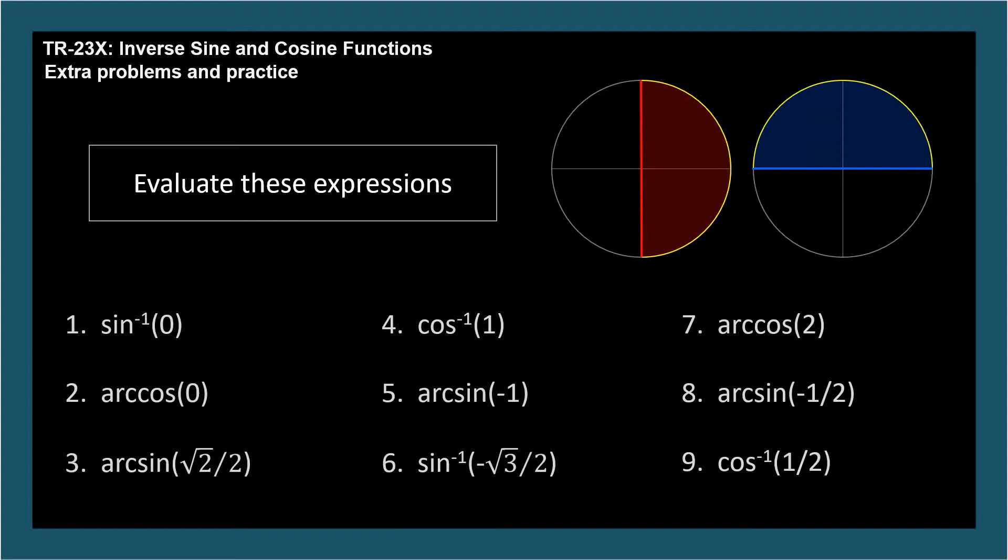We'll do the first three one at a time, then you can pause and do the last six on your own. What's the inverse sine of 0? The angle whose sine is 0. For inverse sine, picture the left circle. The argument is on the red vertical line. 0 happens to be right in the middle. Read across. Angle 0 radians. You should know the common angles in radians. See TR-06 for a review.